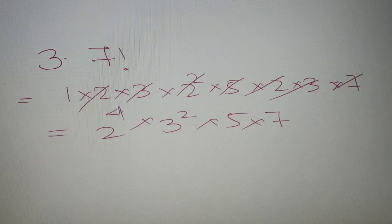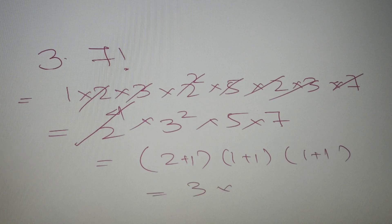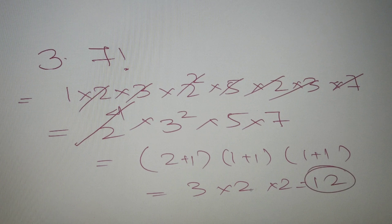According to our formula, we exclude all the powers of 2 and apply (p+1)(q+1)(r+1). This becomes (2+1) × (1+1) × (1+1) = 3 × 2 × 2 = 12. So the number of odd factors for 7 factorial is 12.